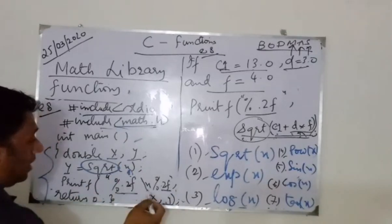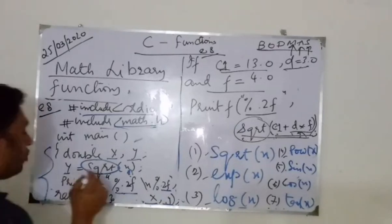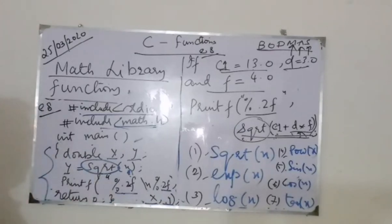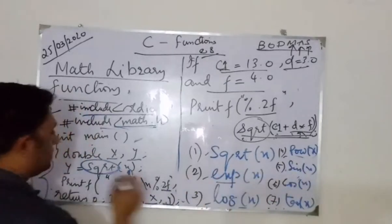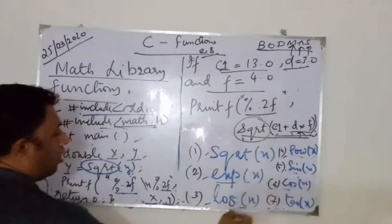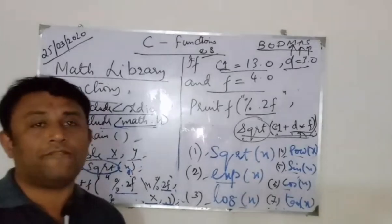This is my answer. And the answer is coming on the next line. I return 0. Now, you can apply with my power. You can do with exponential. You can do with my sin, cos, log, tan. Whatever you want. You can use with math library function. So this is one of the easiest examples to understand what a math library function is.